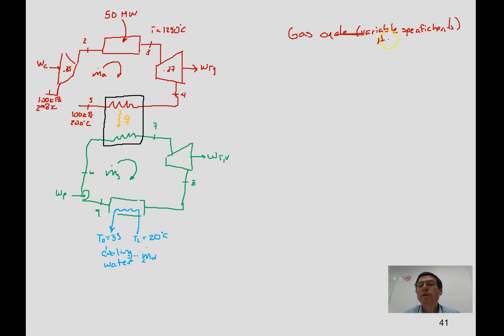We're going to use variable specific heats. In table A17 we have a pressure one of 100 kilopascals and temperature one of 298 kelvin. Using our table, we get the properties.